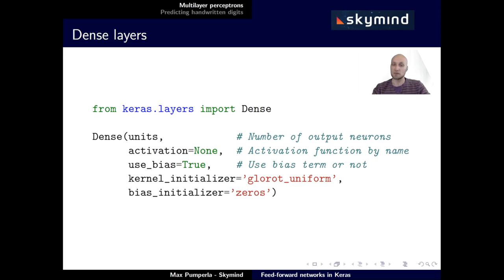And the last two keywords in the signature are the kernel initializer and the bias initializer, which are set to two specific initialization techniques. So the kernel, or the weights, of this dense layer are set to glorot_uniform initialization, and the biases are simply set to zero.